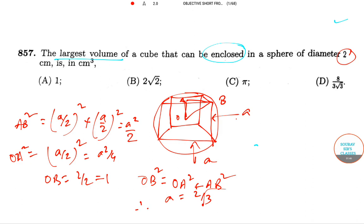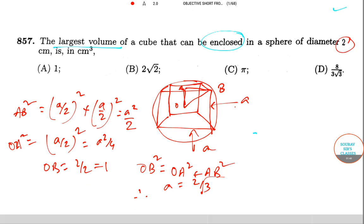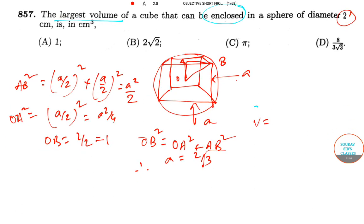Now once we manage to solve the structure, so V will be A cube, we already know, so this is 2 by root 3 whole cube, so 8 by 3 root 3, so option D is the correct answer.